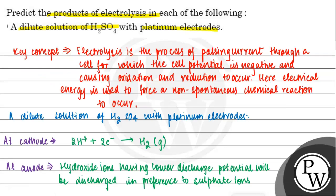Next, what will happen at the anode? What will happen at the anode with the dilute solution of H₂SO₄ and platinum electrodes?